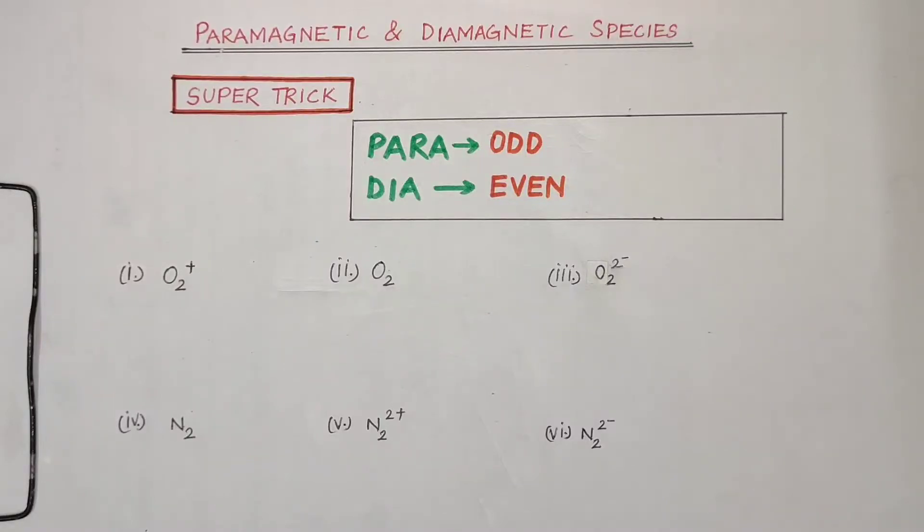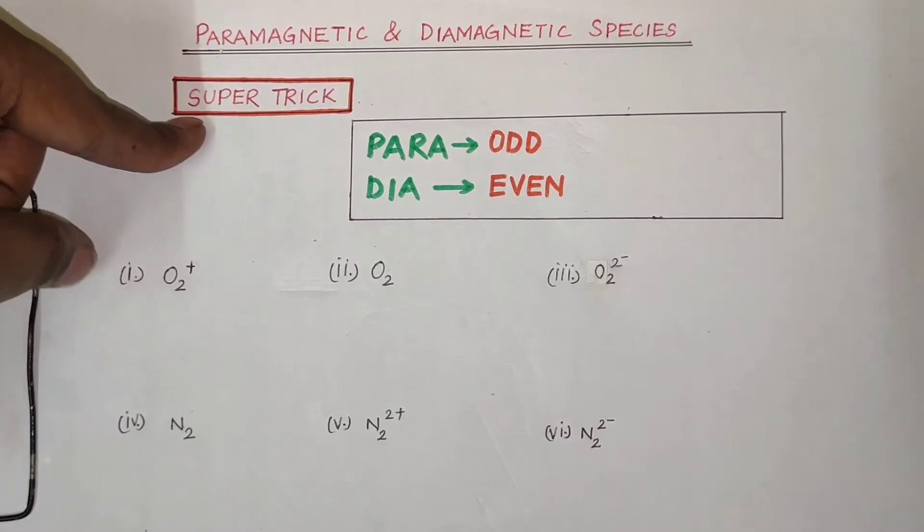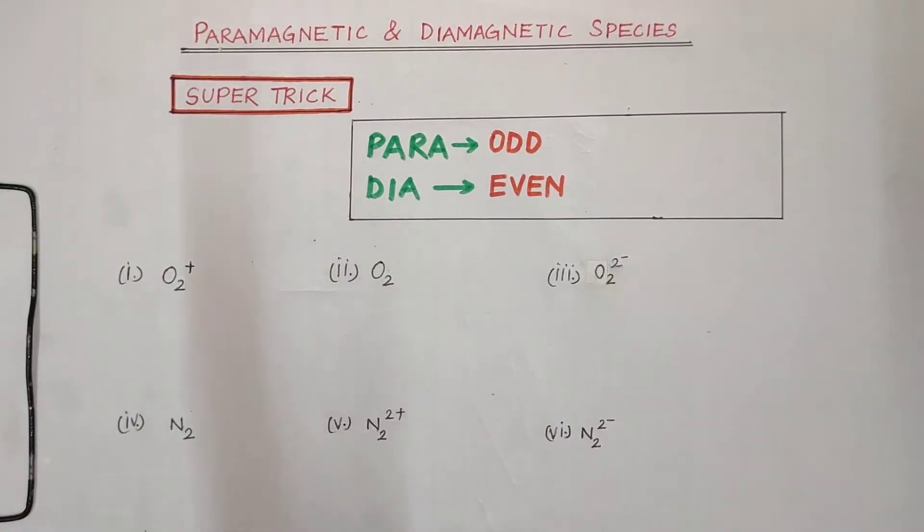Hello everyone, welcome back to the channel. I hope you all are doing fine. So in today's video we are going to learn a super trick to find whether a given set of species are paramagnetic or diamagnetic without writing its configuration.